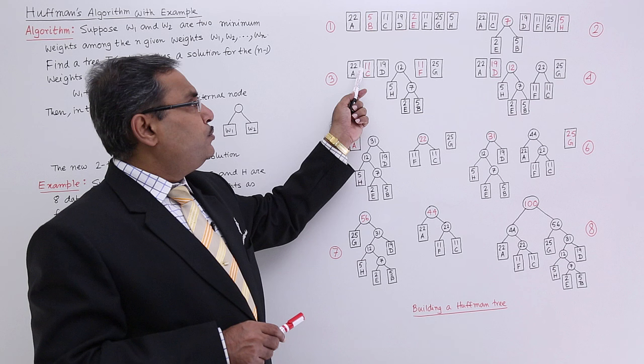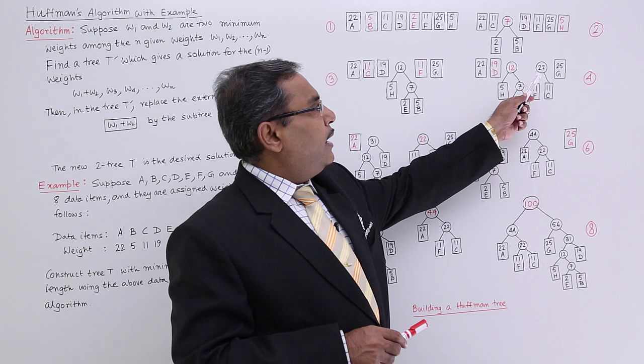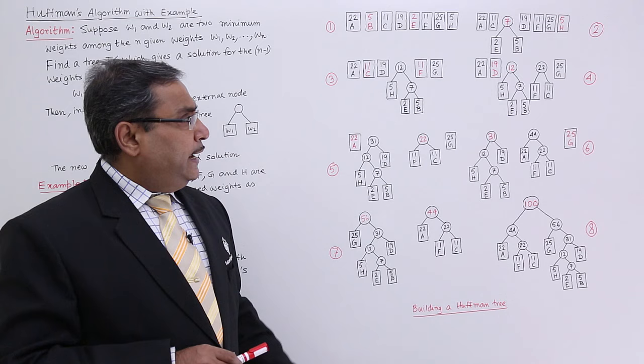Now out of this 22, 11, 19, 12, 11 and 25, I shall have to find out 2 minimum weights. Here I am getting 11 and 11. This 11 and 11 are there. I am making this 22 with this 11 and 11, F and C are 2 children. In this way, the process will be continued.